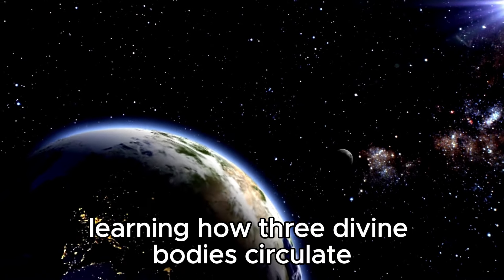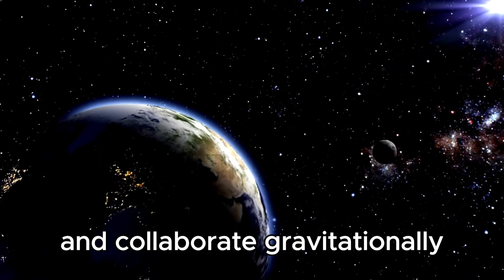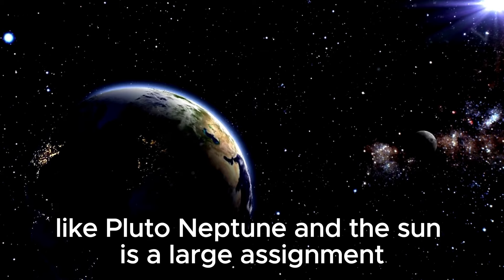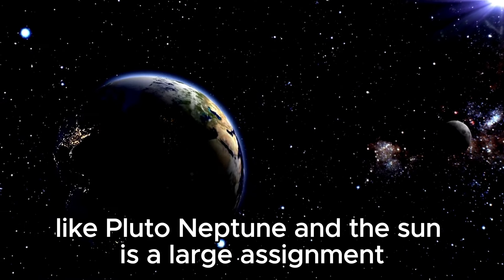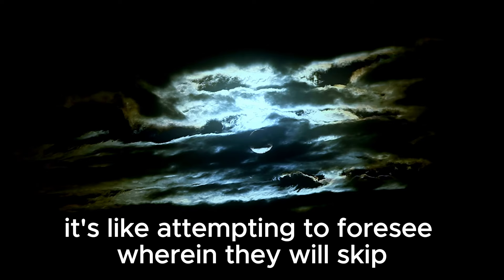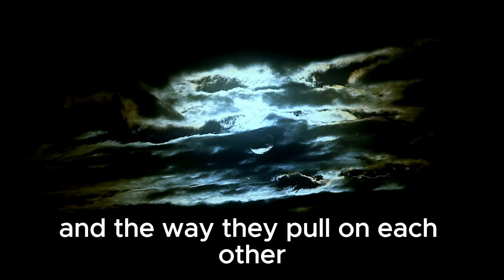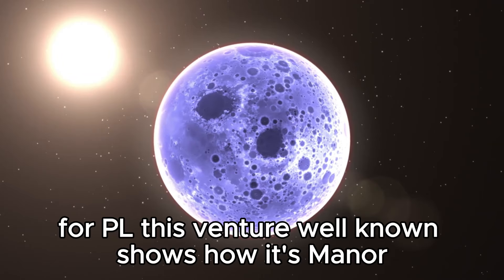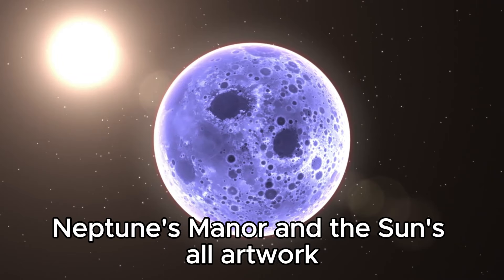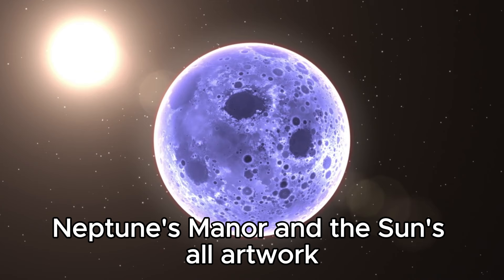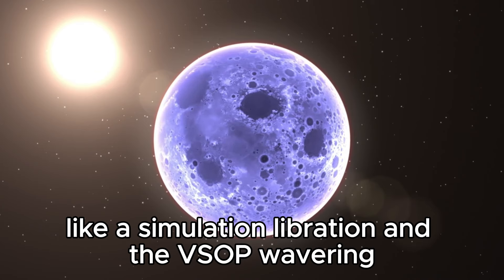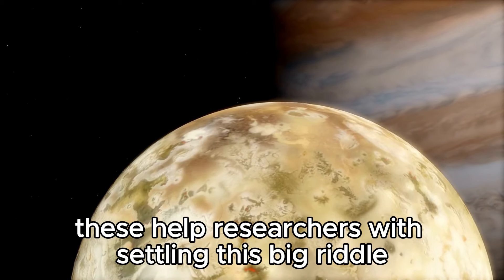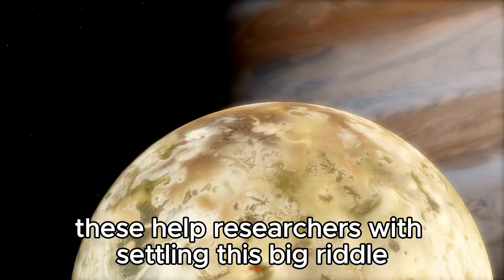Learning how three celestial bodies move and collaborate gravitationally, like Pluto, Neptune, and the sun, is a large challenge. It's like attempting to foresee where they will pass based totally on where they start and how they pull on each other. For Pluto, this venture shows how its manner, Neptune's manner, and the sun's all work like assimilation, libration, and the VSOP oscillation. These help researchers with solving this big riddle.